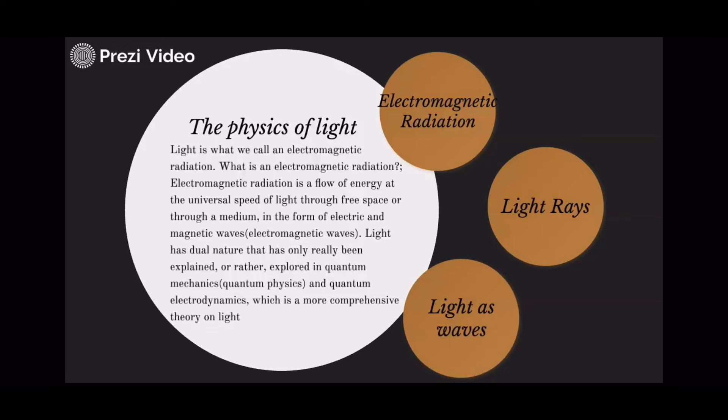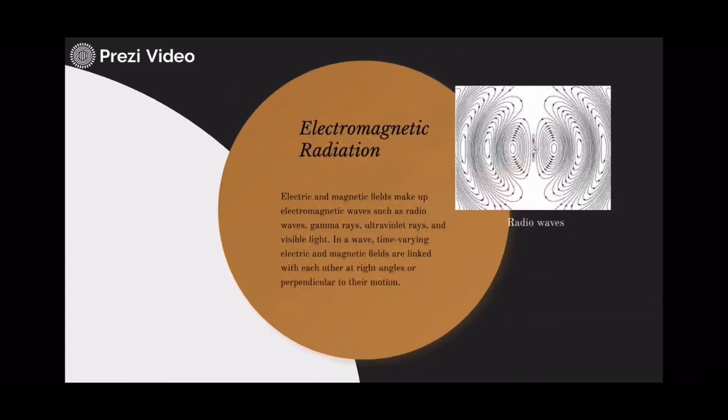Electromagnetic radiation. Electric and magnetic fields make up electromagnetic waves, such as radio waves, gamma rays, ultraviolet rays, and visible light.